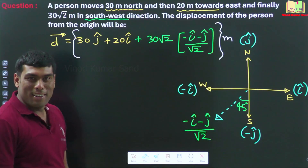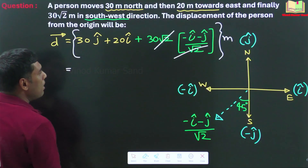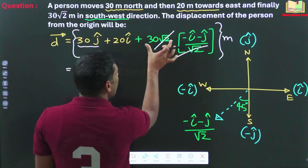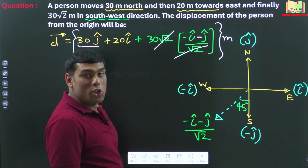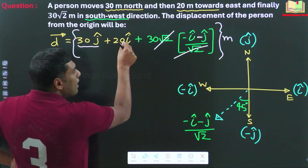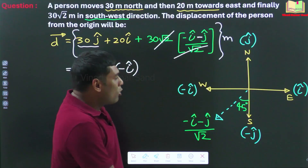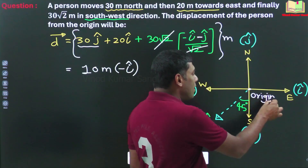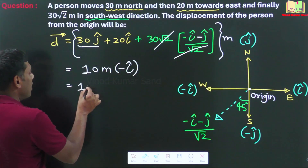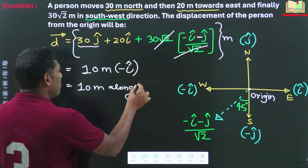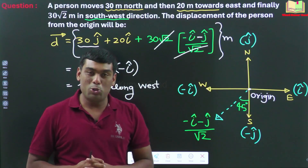Here I am writing meter. Now the question becomes pretty simple. We can cancel the root 2 terms. We have 30 j cap here, and then we have minus 30 j cap — so minus 30 j cap and plus 30 j cap are getting cancelled out. Now we have 20 i cap and minus 30 i cap. This means the answer would be 10 meter of minus i cap. So with respect to the origin, the displacement is simply 10 meter in the west direction — 10 meter along west, 10 meter in the minus i cap direction. This is one solution using vectors.